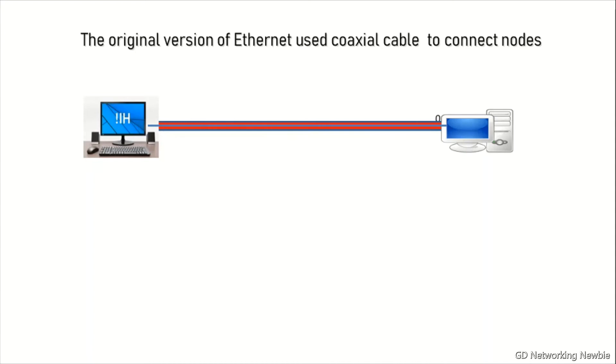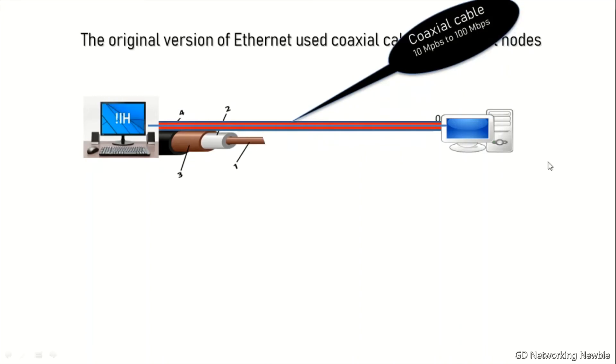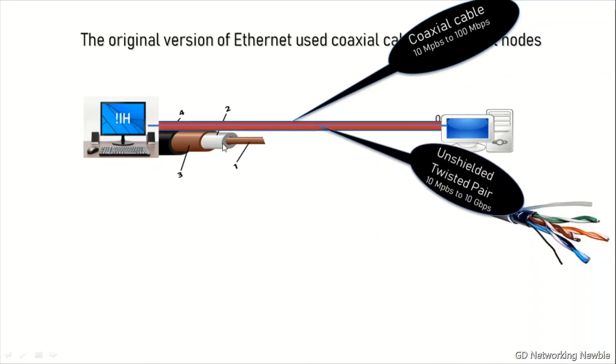The nodes were connected with the help of this coaxial cable, and coaxial cable offered data rates from 10 megabits per second to 100 megabits per second. This is how the coaxial cable looks like.